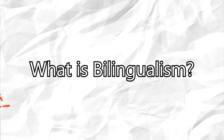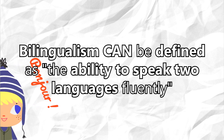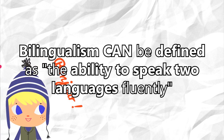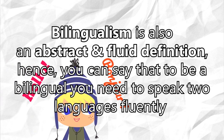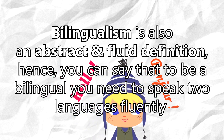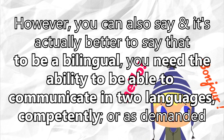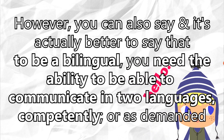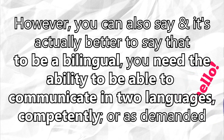What is bilingualism? Bilingualism can be defined as the ability to speak two languages fluently. Bilingualism is also an abstract and fluid definition. Hence, you can say that to be bilingual you need to speak two languages fluently. However, it is actually better to say that to be bilingual you need the ability to communicate in two languages competently or as demanded.